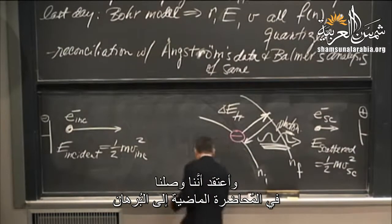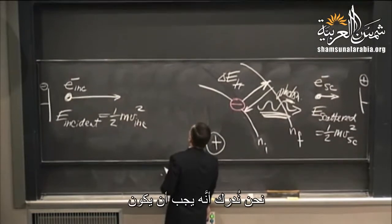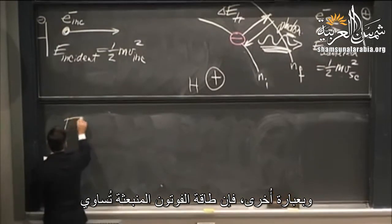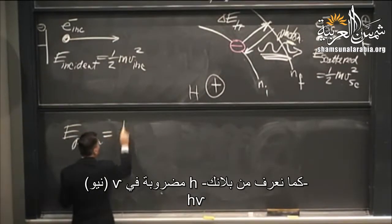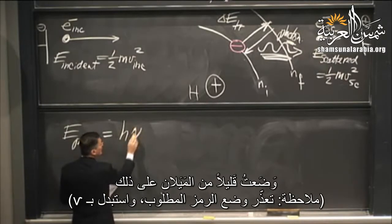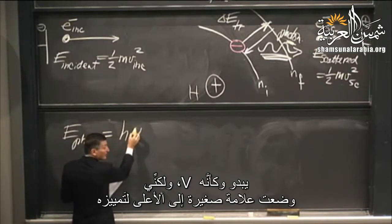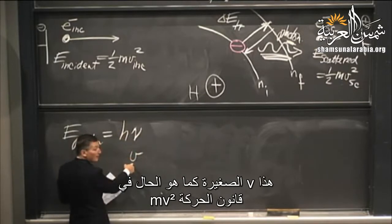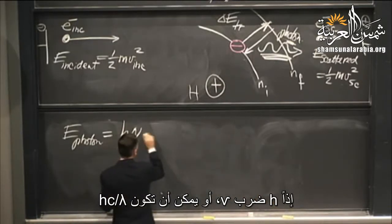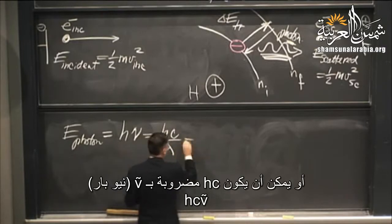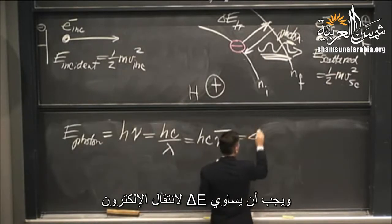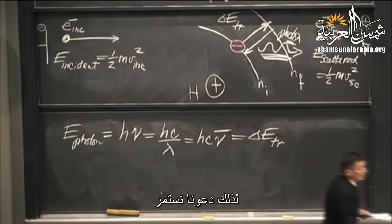There needs to be conservation of energy. The energy of the emitted photon — which we know from Planck is h times nu — must equal delta E of the transition. This can be written as h nu, or h c over lambda, or h c nu-bar. Those are three ways of writing the energy of the photon, and that must equal delta E of the transition.